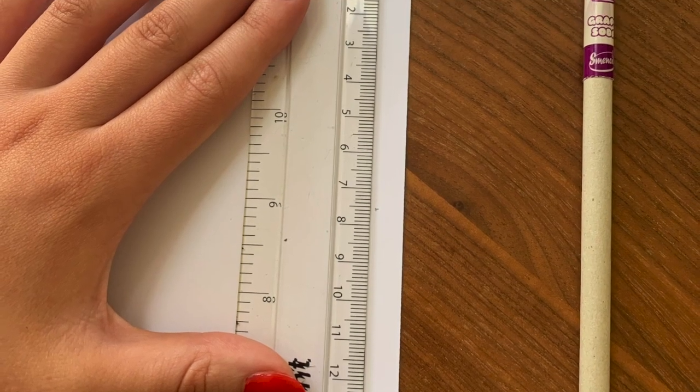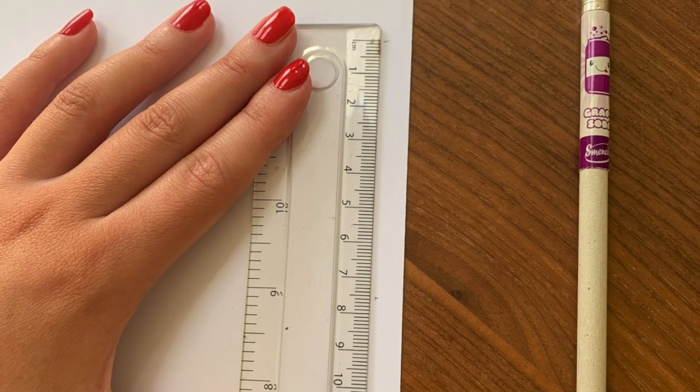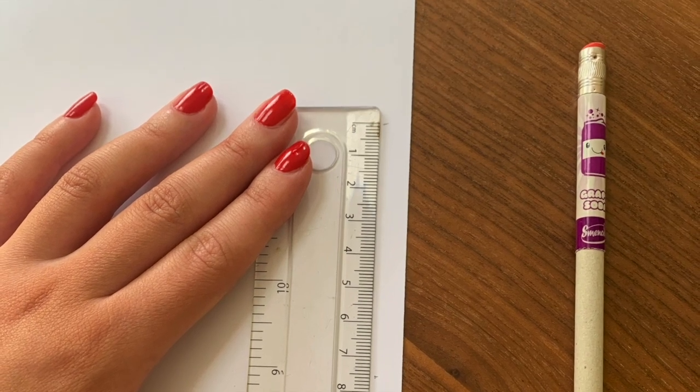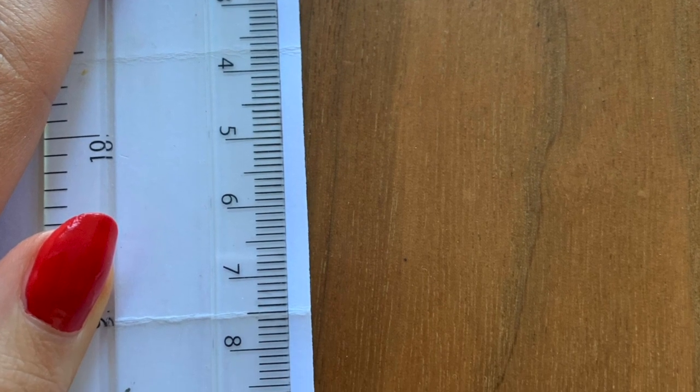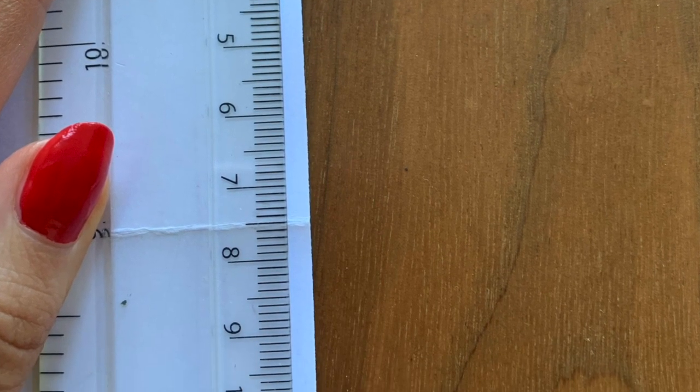I measured out 15 centimeters from the bottom to the middle and made a mark just on the side of the page. Then I measured out from that mark 7.5 centimeters and made another little mark.